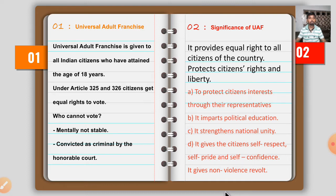Citizens get equal rights to vote regardless of caste, religion, or sex — male or female. Those who cannot vote are: first, those who are mentally not fit; and second, whoever has been convicted as a criminal by the honorable court. These two types of people cannot vote and do not get the right to vote.